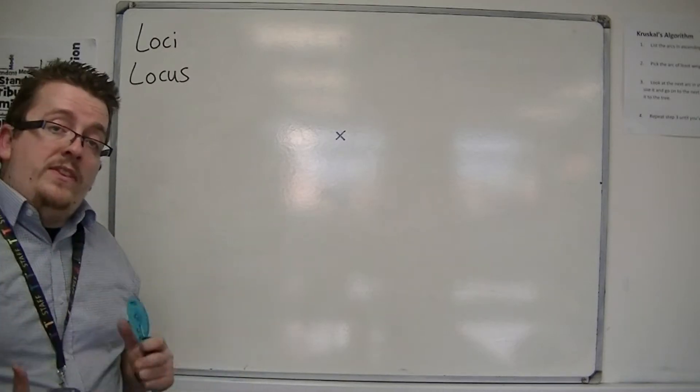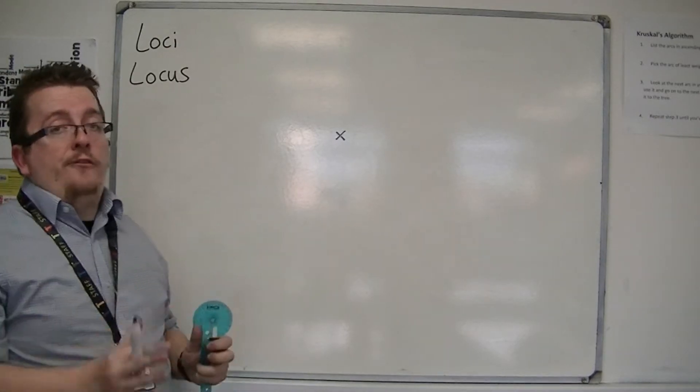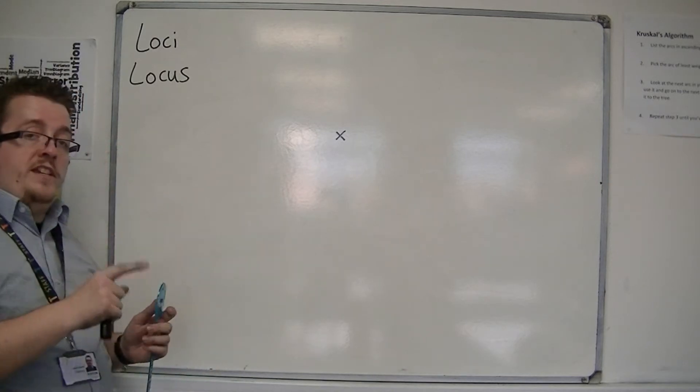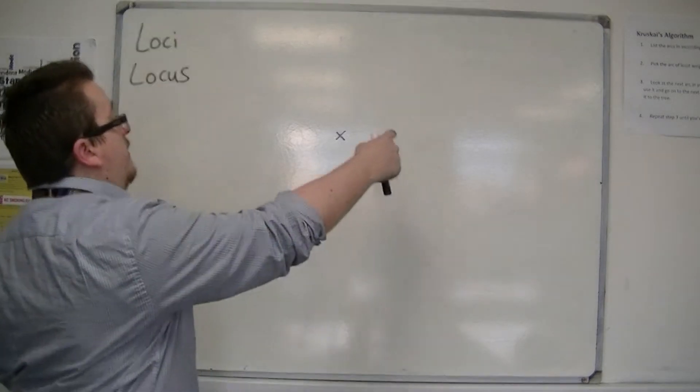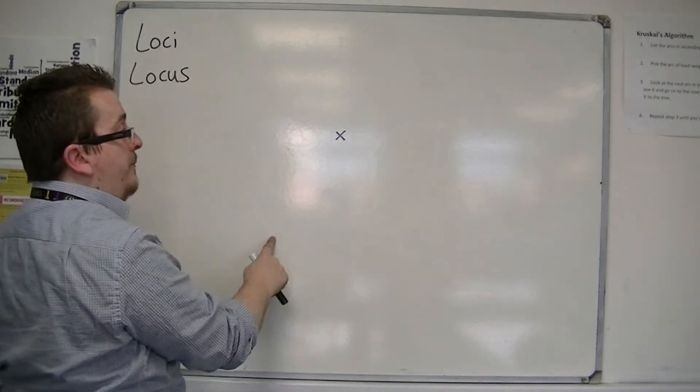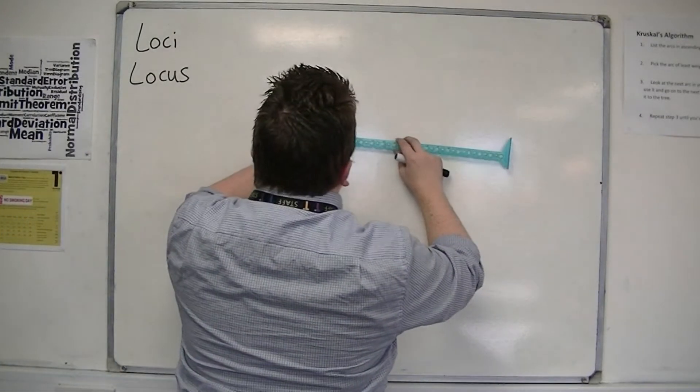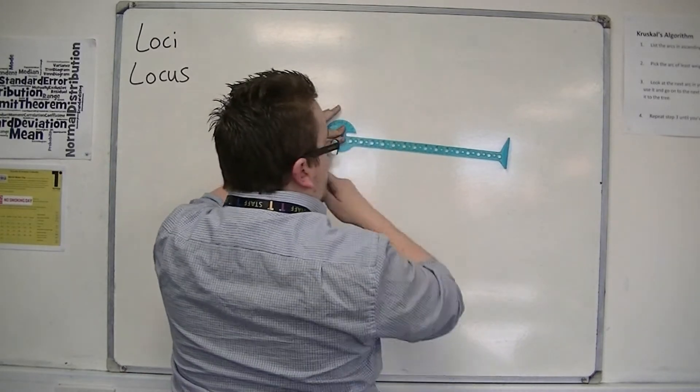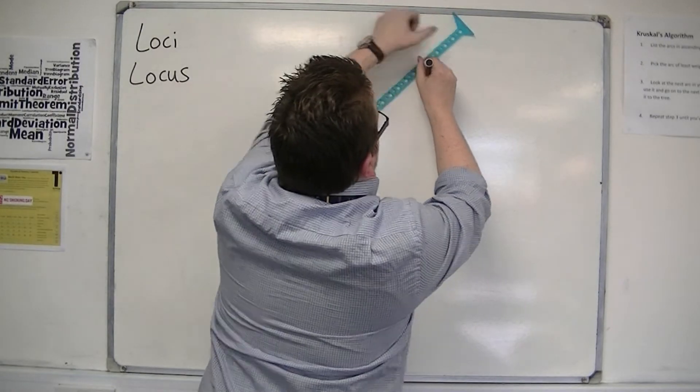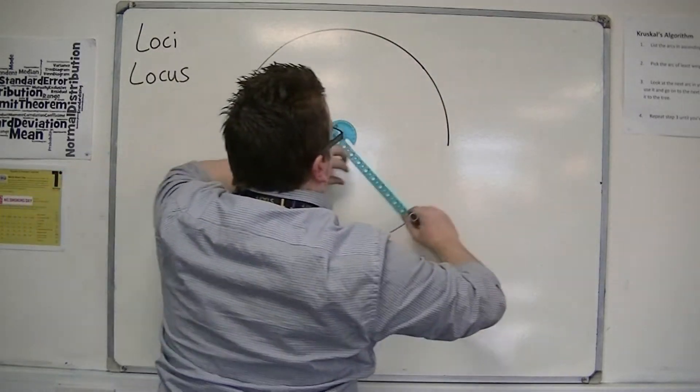So when they did that, and they all had to be exactly five meters away, what would happen is that the 30 of them would construct themselves in a circle around that point. So if I'm looking at the locus of a point, I'm looking at a circle. Not the best instrument in the world, but it'll do.